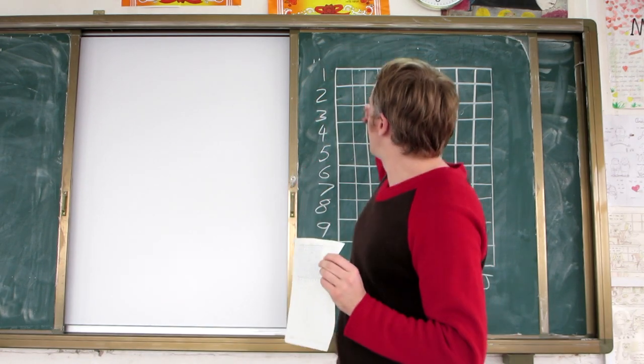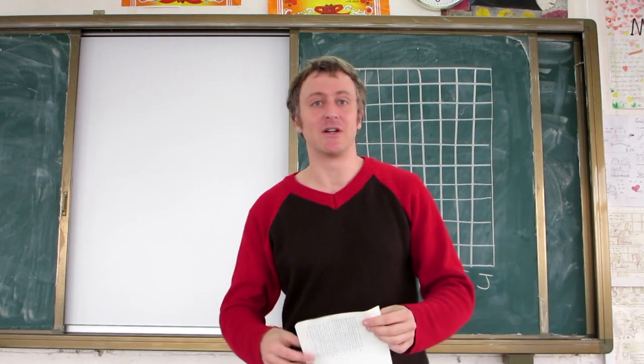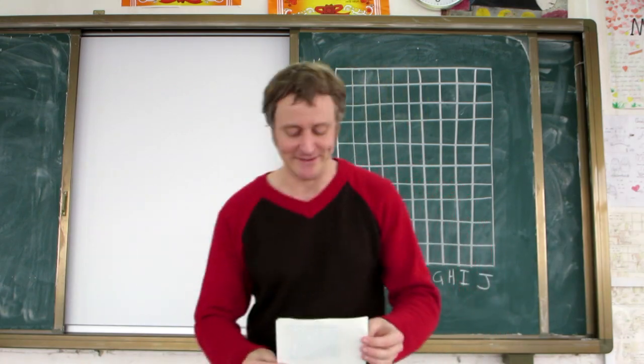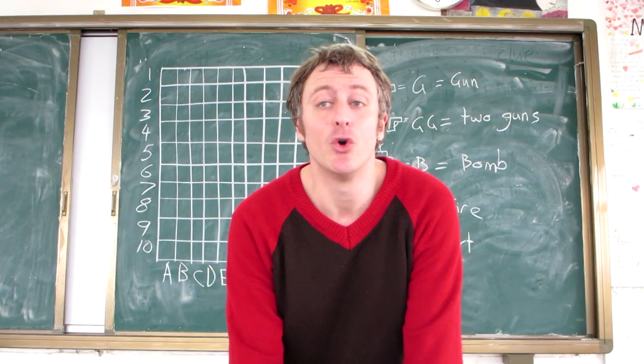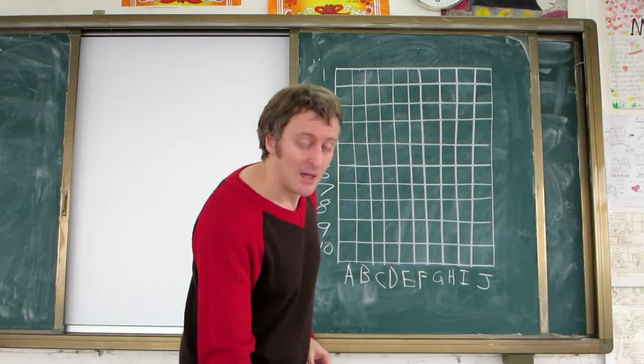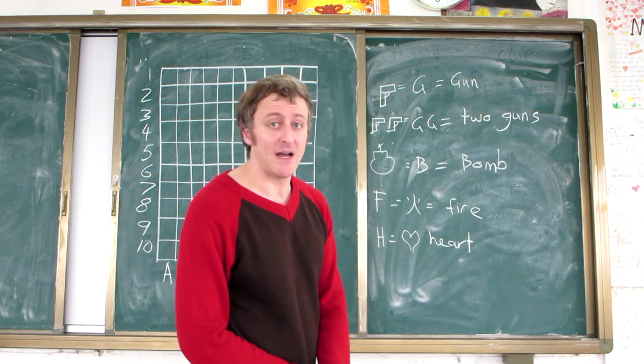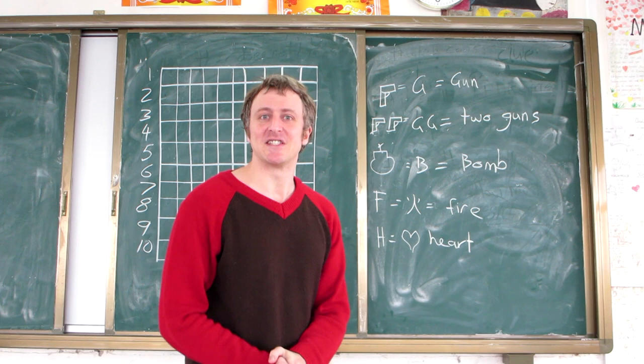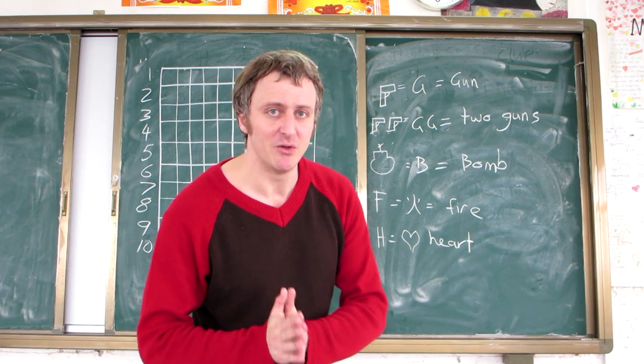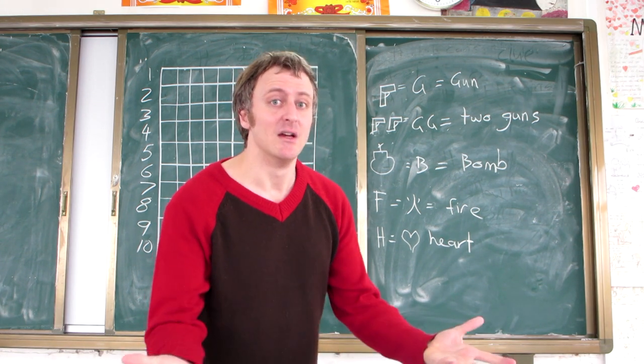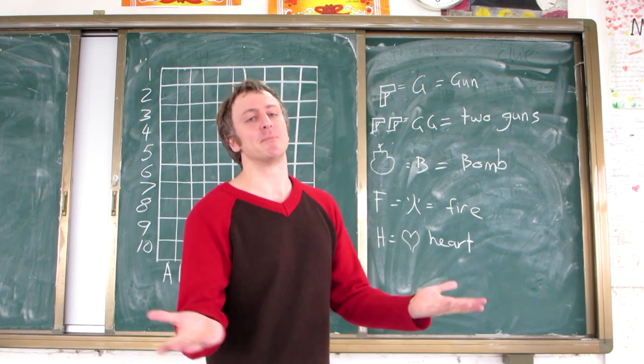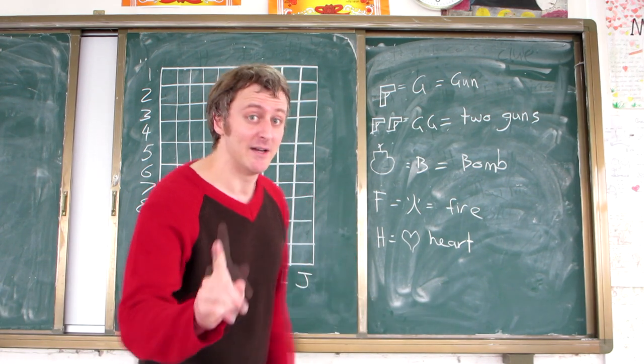Now, each spot on the grid represents a different kind of value or weapon. How do you win? Your team kills the other team. Now, I'm using guns and bombs and fire. A little bit nasty. You can change this to whatever you want. I'll talk about that at the end. So, it's not so violent. It might not be appropriate where you are, and that's fine.